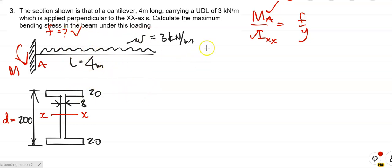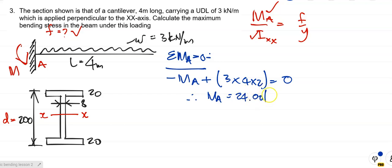So I'm going to say the sum of the moments at A is equal to 0. And I'm going to say the moment at A, which is anti-clockwise reaction, so is there, plus, it will be plus 3 times 4 times 2, is equal to 0. So therefore, the moment at A is equal to 24 kNm. And because it's positive, it means that our assumption that it is anti-clockwise. We're not too worried about the way it's going at the moment, but it's 24 kNm.